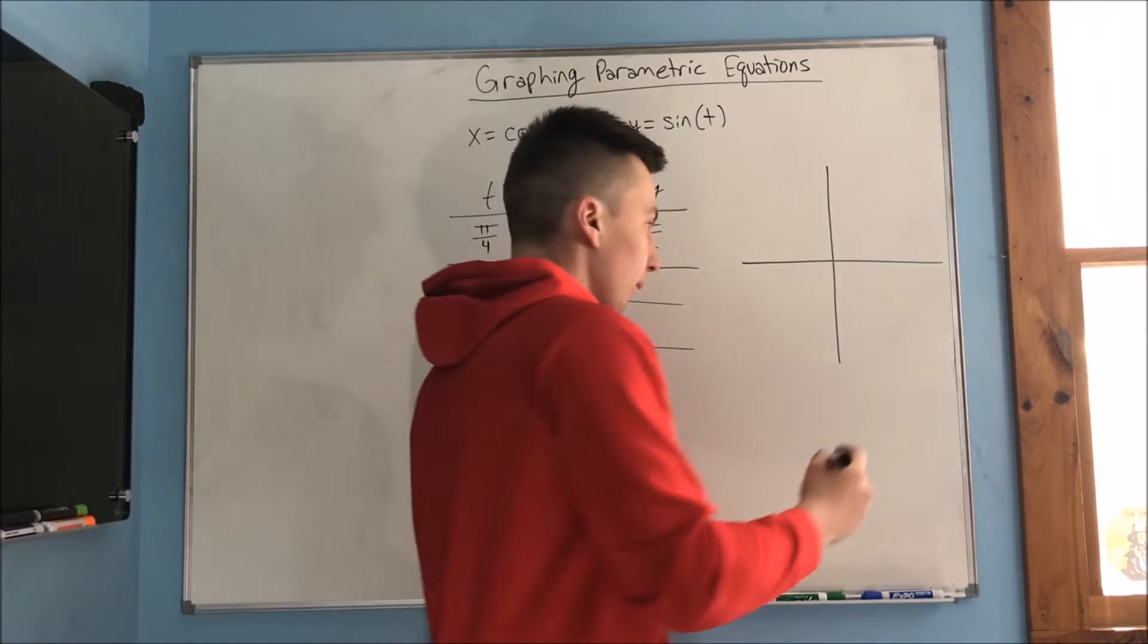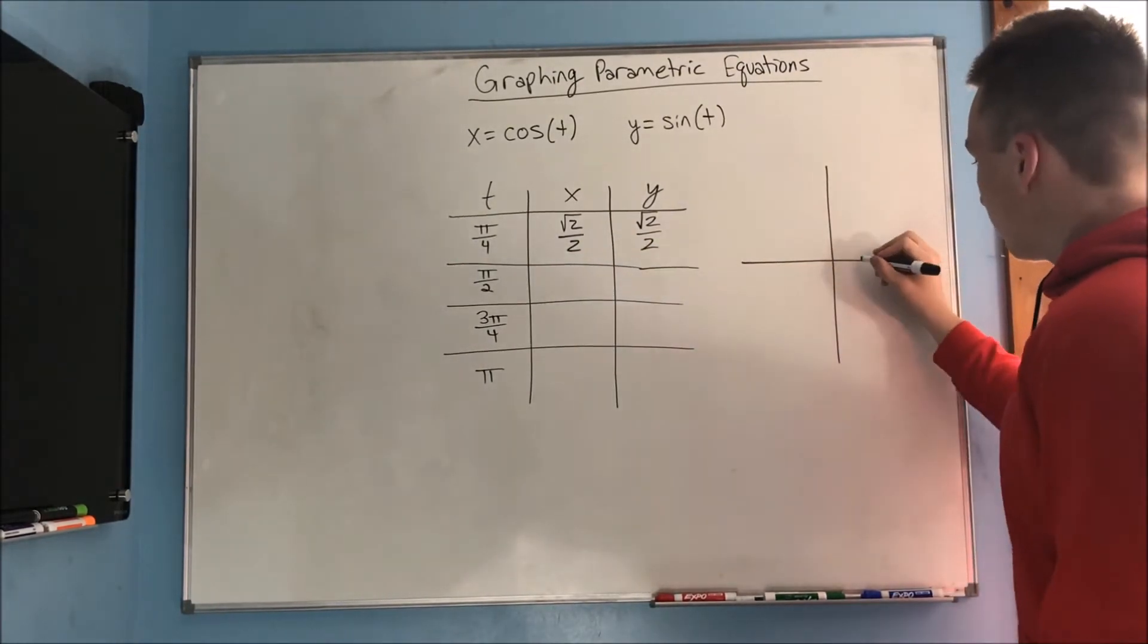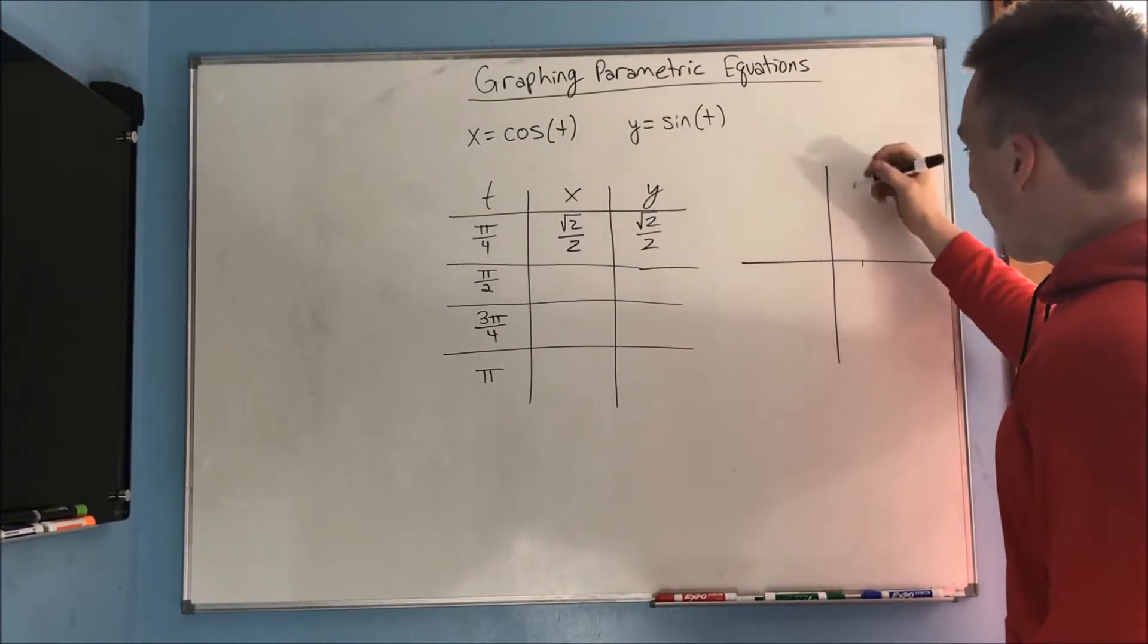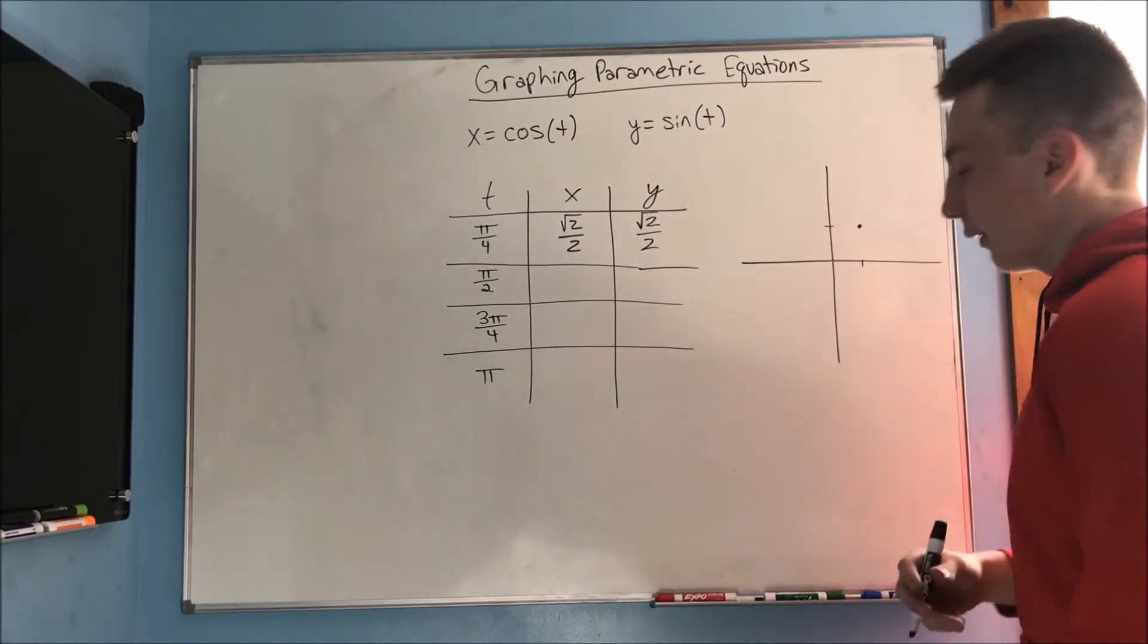Okay, let's plot that point. So we know we have a x of rad 2 over 2. Let's say that's right here. We have a y of rad 2 over 2. Let's call that here. So about right here.